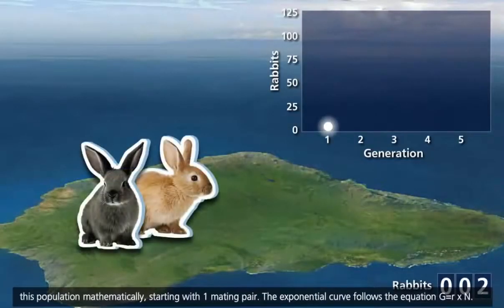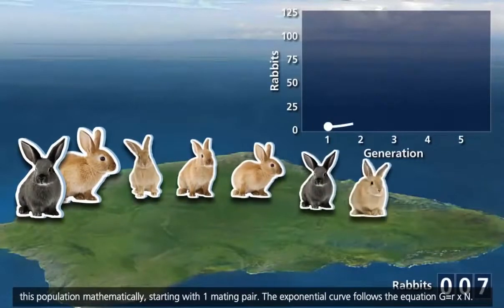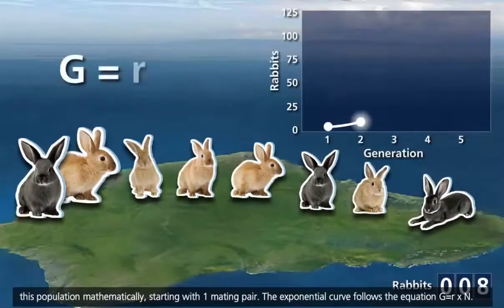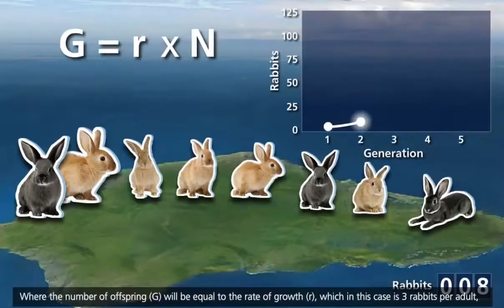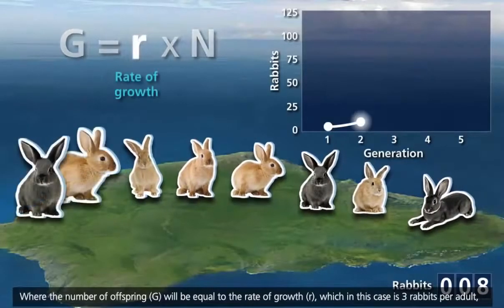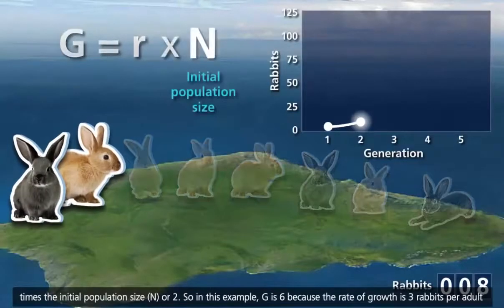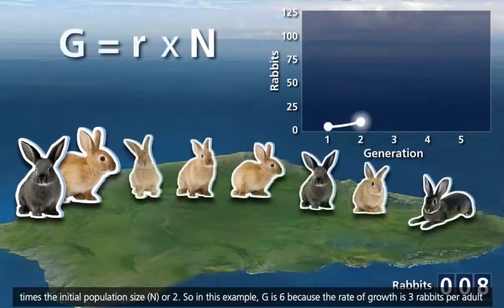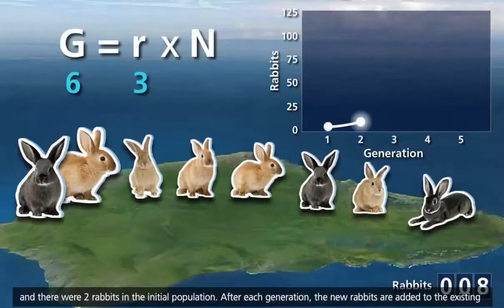Let's look at the exponential growth of this population mathematically, starting with one mating pair. The exponential curve follows the equation g equals r times n, where the number of offspring, g, will be equal to the rate of growth, r — which in this case is three rabbits per adult — times the initial population size, n, or two. So in this example, g is six, because the rate of growth is three rabbits per adult and there were two rabbits in the initial population.